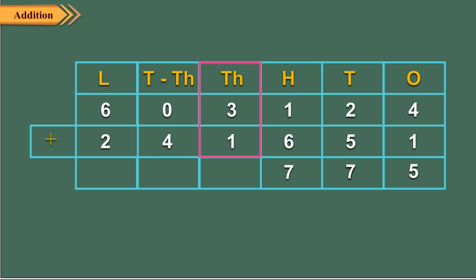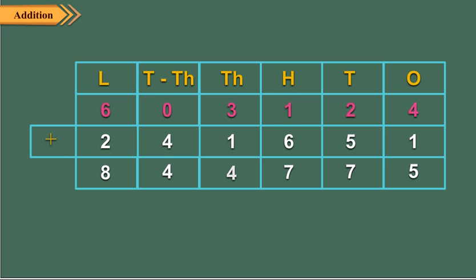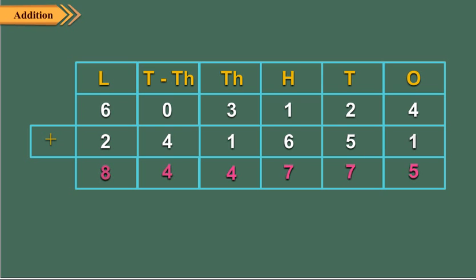Add thousands: 3 thousands plus 1 thousand is equal to 4 thousands. Write 4 in the thousands place. Add ten-thousands: 0 ten-thousands plus 4 ten-thousands is equal to 4 ten-thousands. Write 4 in the ten-thousands place. Finally, add the lakhs: 6 lakhs plus 2 lakhs is equal to 8 lakhs. Write 8 in the lakhs column. Thus, the sum of 603124 and 241651 is 844775.